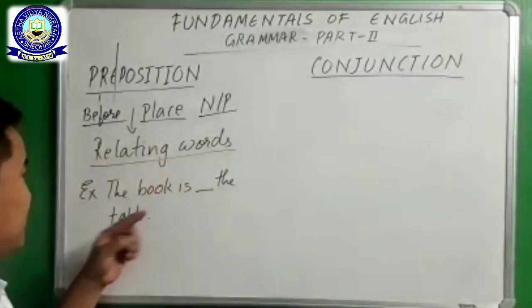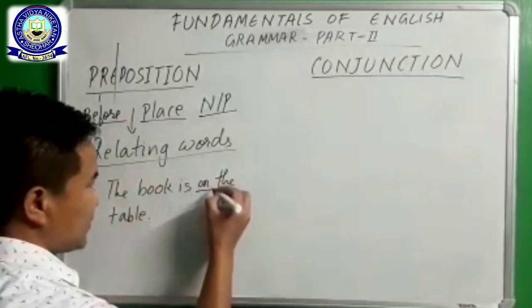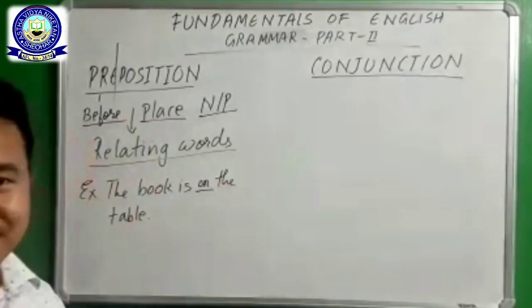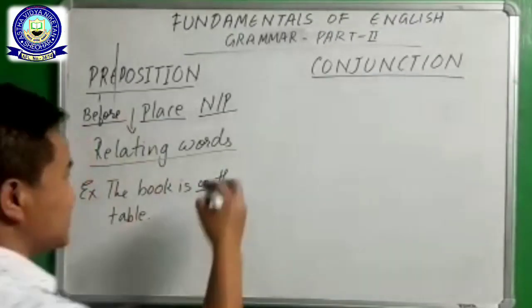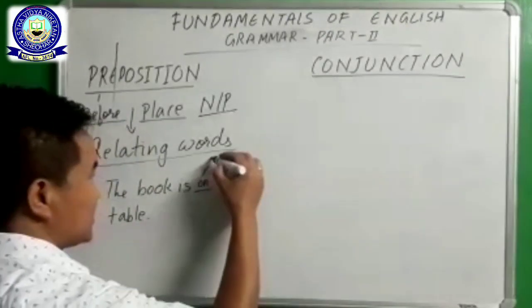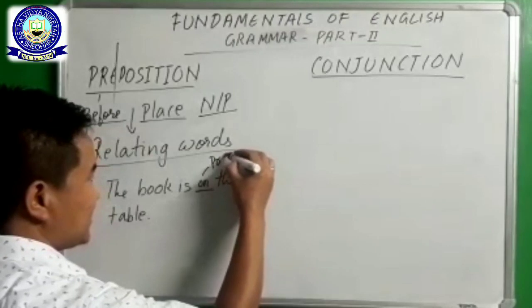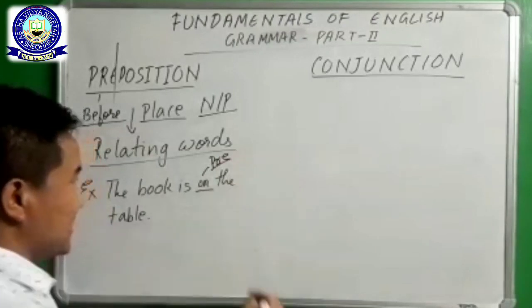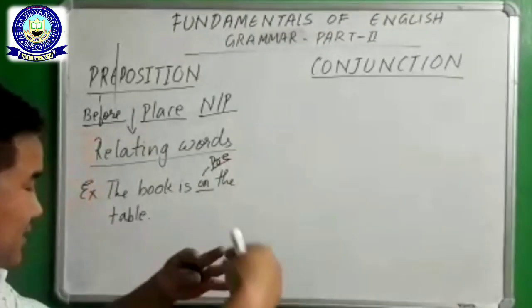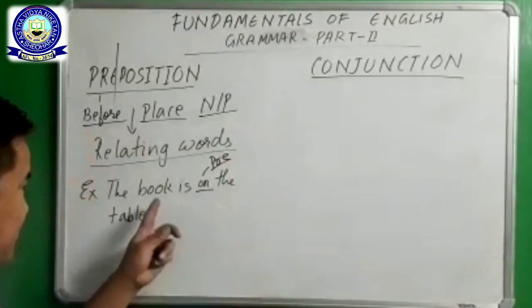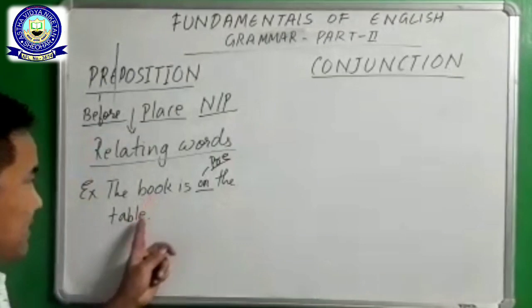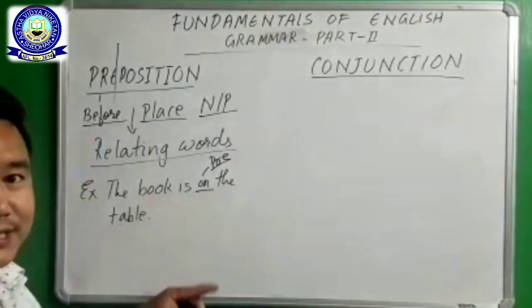If you write 'The book is on the table,' now the preposition 'on' makes a relation between book and table in the sentence.